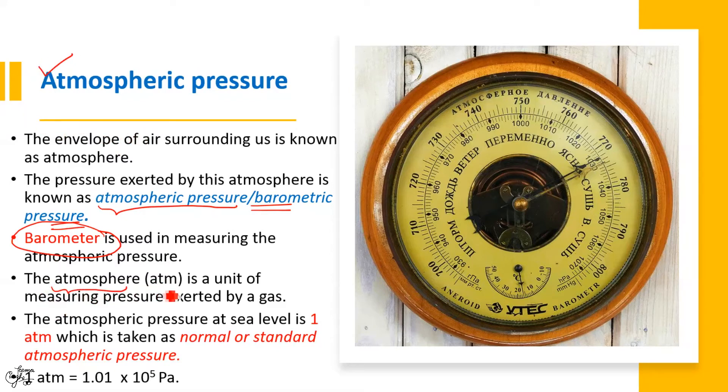What you need to remember is that atmospheric pressure is measured in the unit atmosphere, abbreviated as ATM. Also, you need to remember that the atmospheric pressure at sea level is roughly 1 ATM, which is taken as normal or standard atmospheric pressure. Now there is a relationship between atmosphere and Pascal, which is 1 ATM is equal to 1.01 into 10 raised power 5 Pascal.